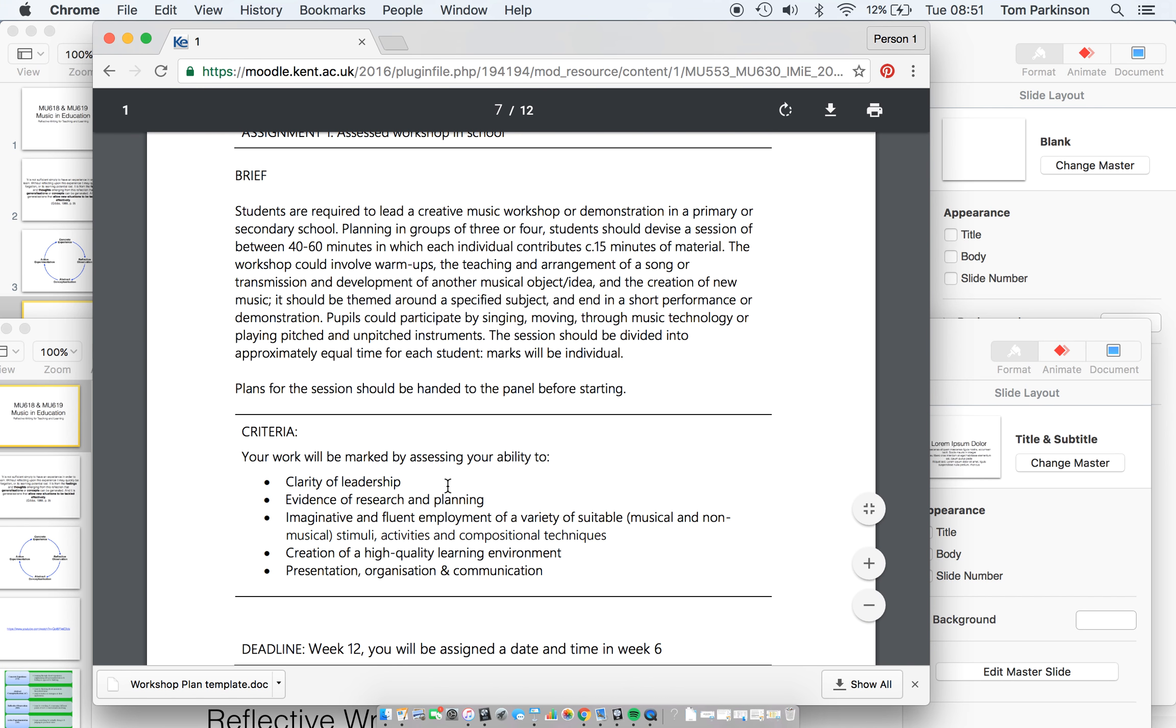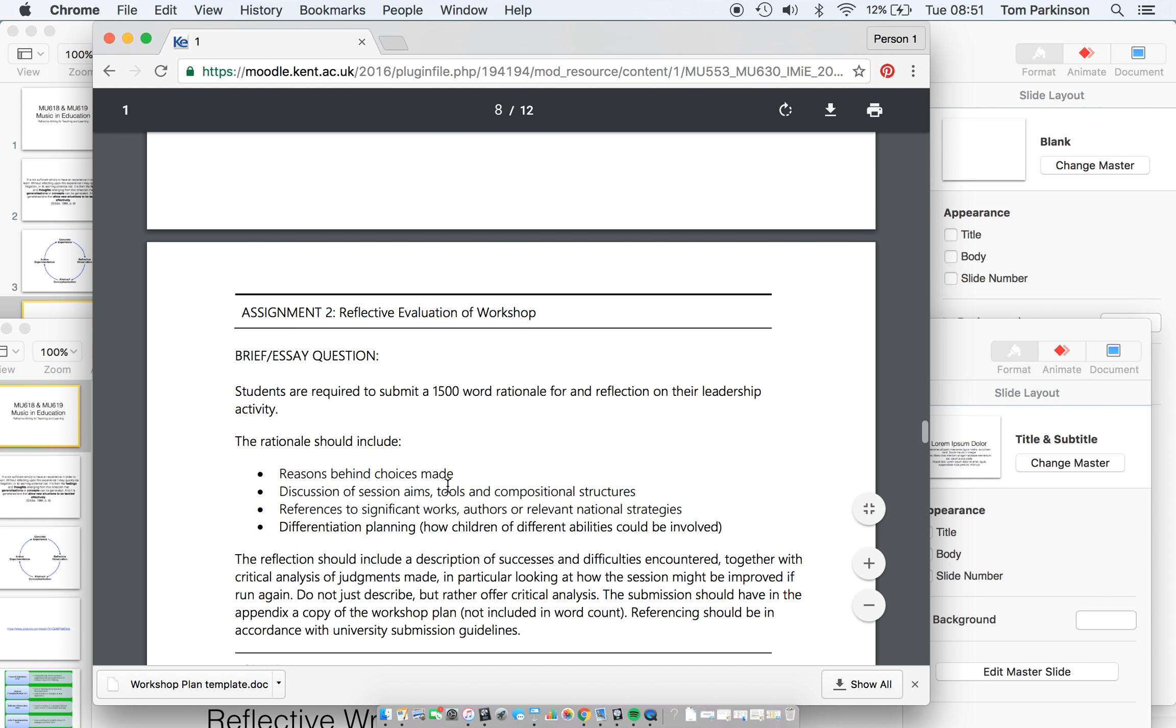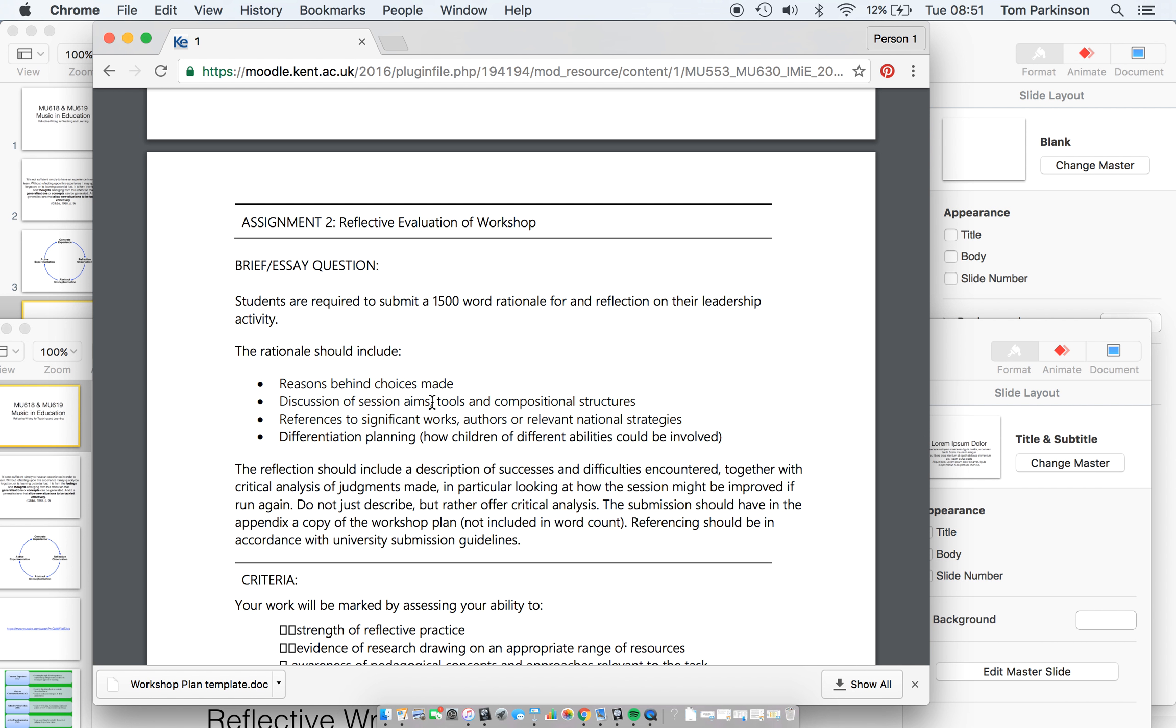So the reflective evaluation, you'll see here, it's 1500 words, so not an enormous piece of work, but nonetheless there's enough words there for you to give some quite deep insight about your experience. So looking at the rationale, what you want in the rationale, rationale being explaining why you chose to do what you did, we want to see the reasons behind the choices made.